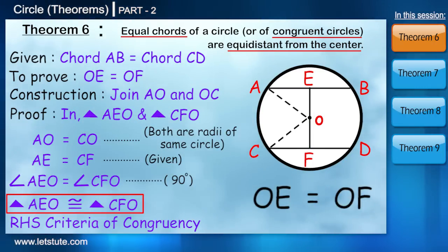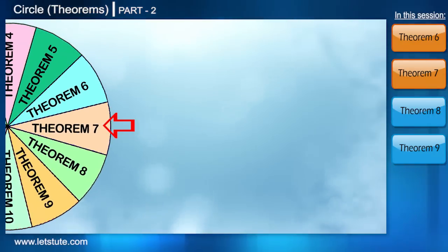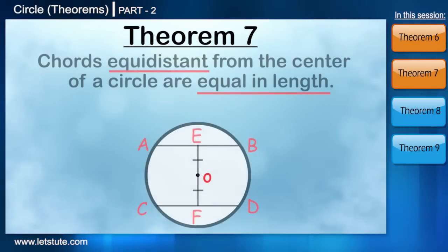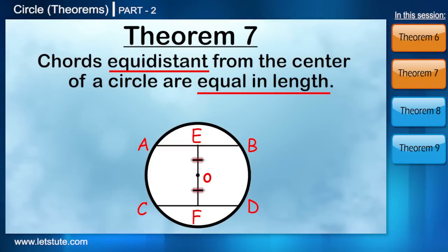So from this we can say that OE is equal to OF. Here we are done with another theorem. Hope you all are understanding everything and trying to be with me. Let's have a look at the converse of the same theorem which states that chords equidistant from the center of a circle are equal in length.